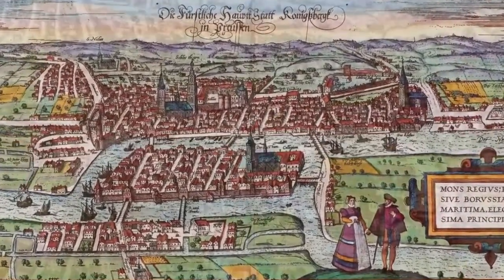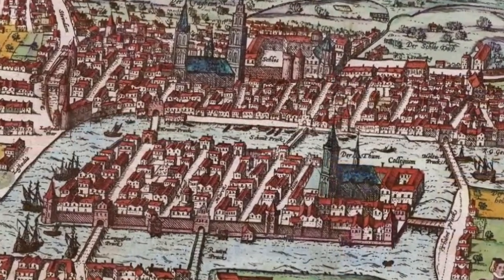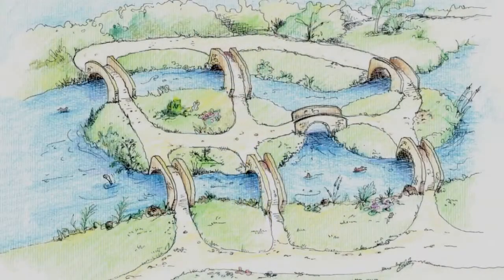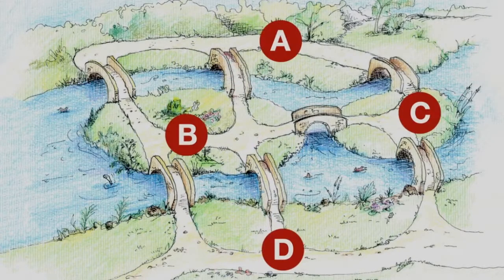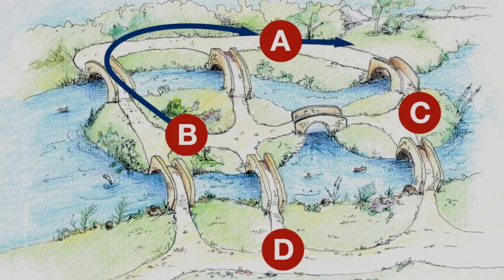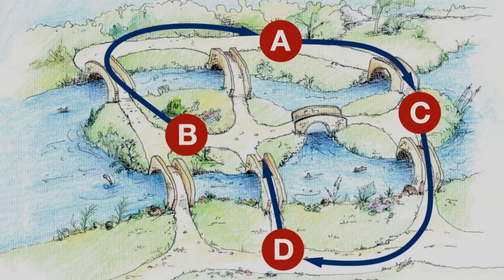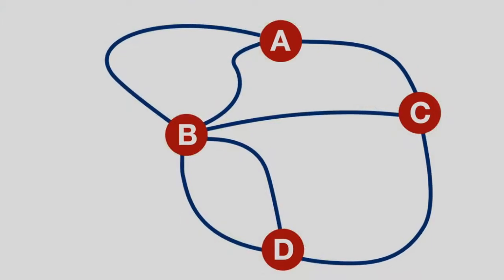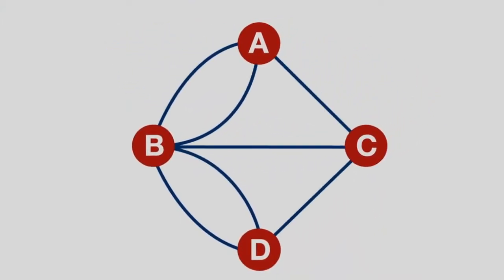Back in the 18th century, the seven bridges in the city of Königsberg became famous due to a clever mathematician called Leonard Euler. Everyone wanted to know: if they started at some point in the city, could they cross each of the seven bridges once and only once and return to the starting point? Euler worked out that it couldn't be done, and why it couldn't be done. This represented the beginning of graph theory. A graph is another name for a network.